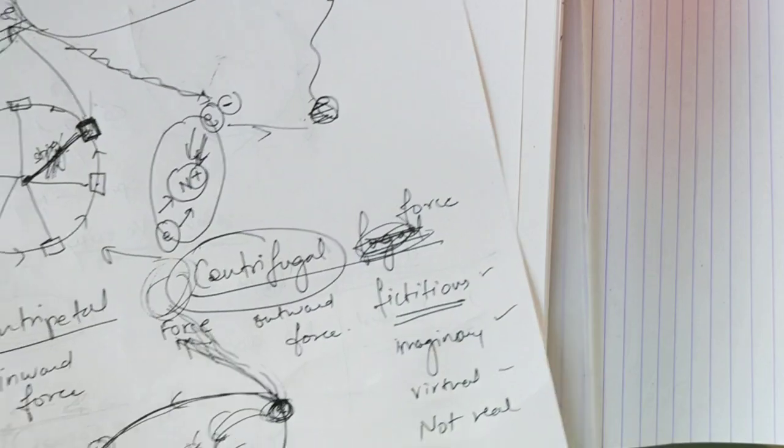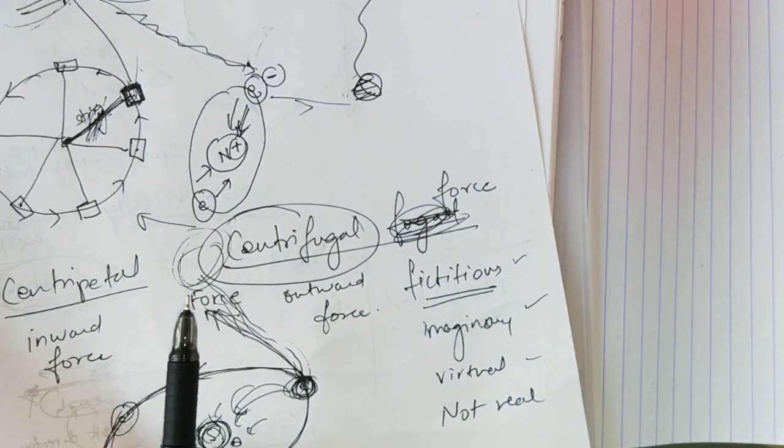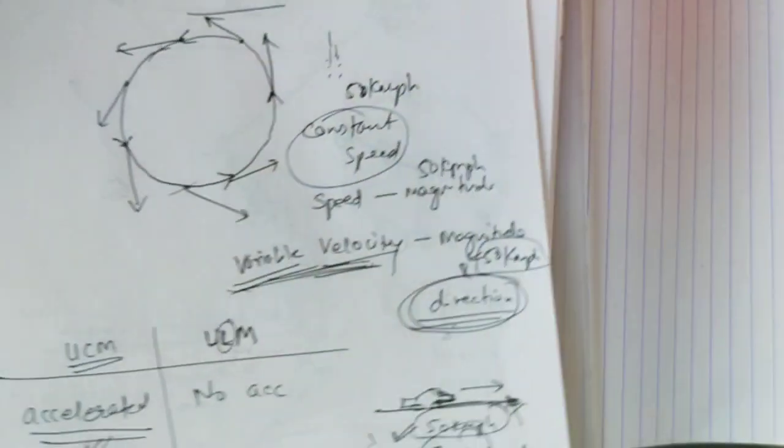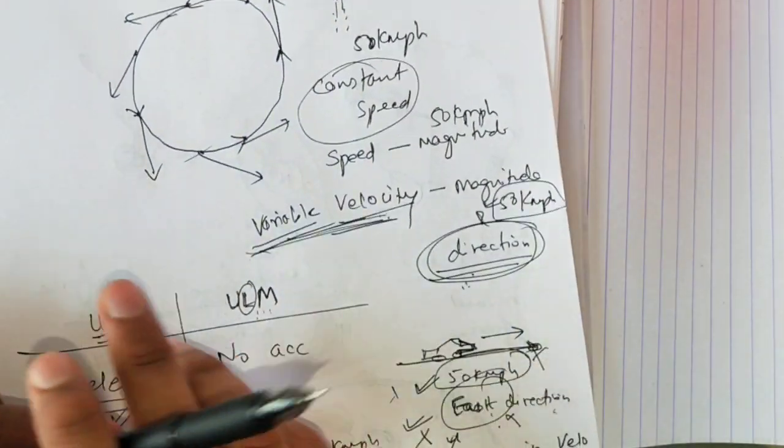So here you have to study the definitions of centripetal and centrifugal force, then study the difference between uniform circular motion and uniform linear motion. That's it with the fourth chapter. All the best for your test.